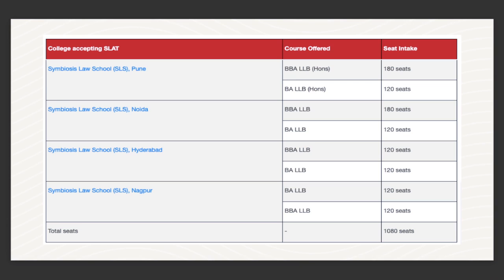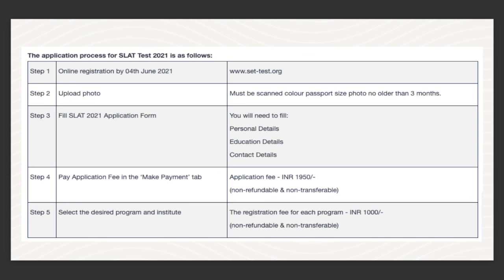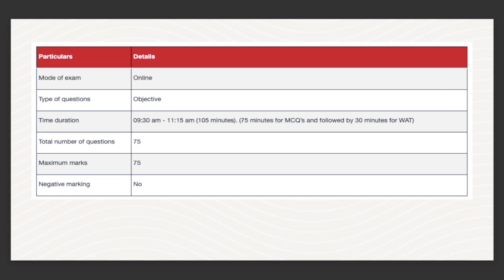In Hyderabad and Nagpur, you will have two individual courses — BBA LLB and BA LLB — with 120 seats each, totalling 240 seats. To register, you go to the SET — Symbiosis Entrance Test — website: set-test.org. The application fee is Rs. 1,950 for the Symbiosis Entrance Test, and an additional Rs. 1,000 for the law program. This fee is completely non-refundable.